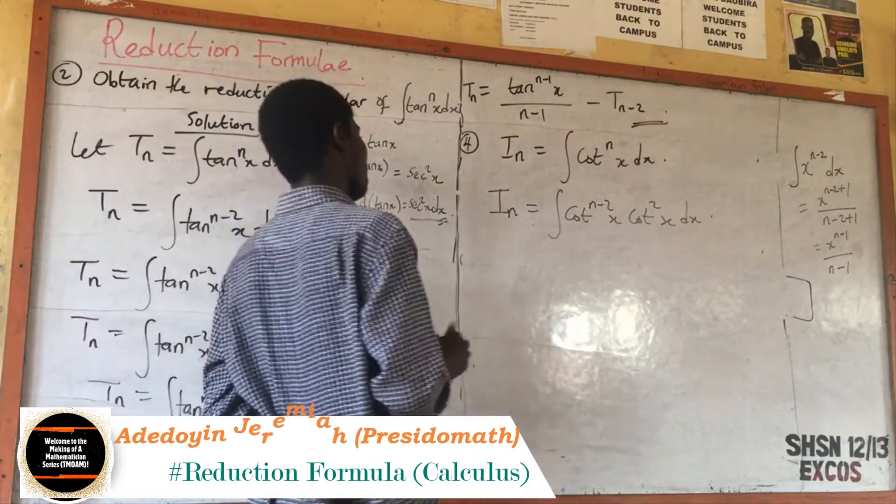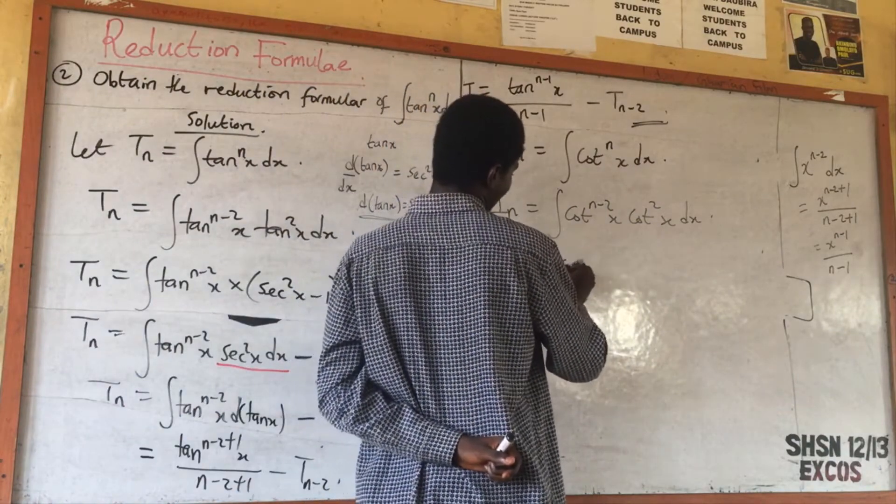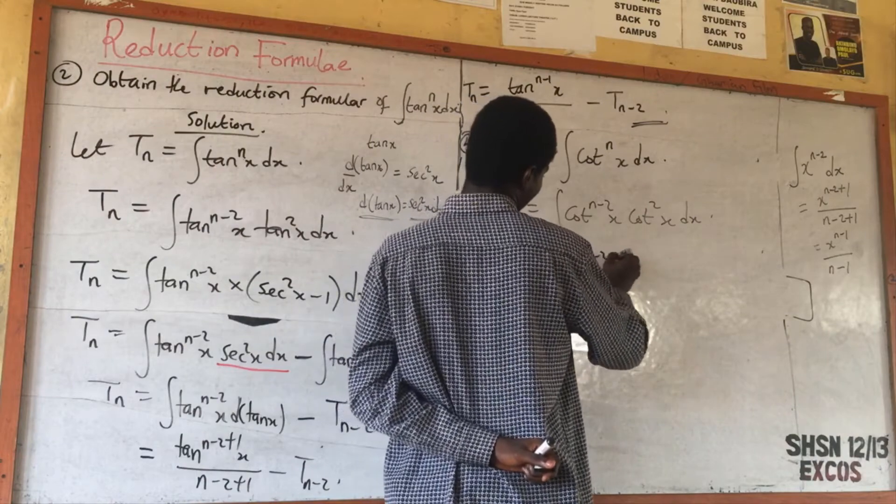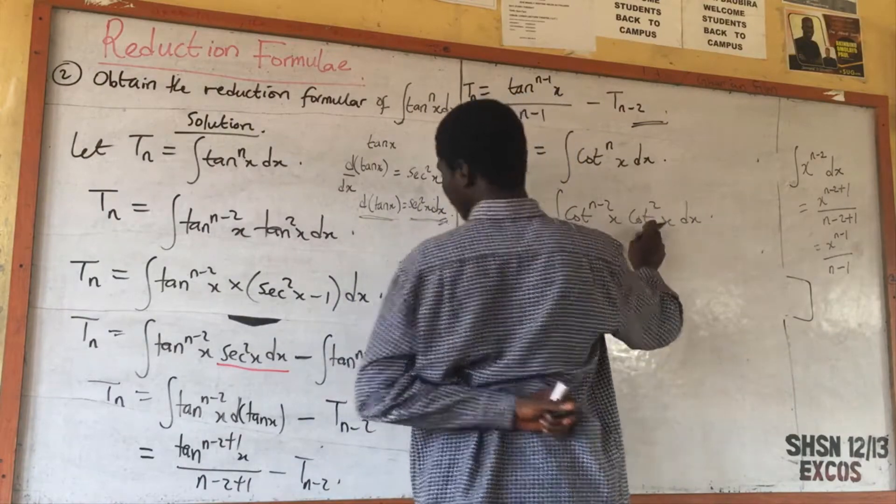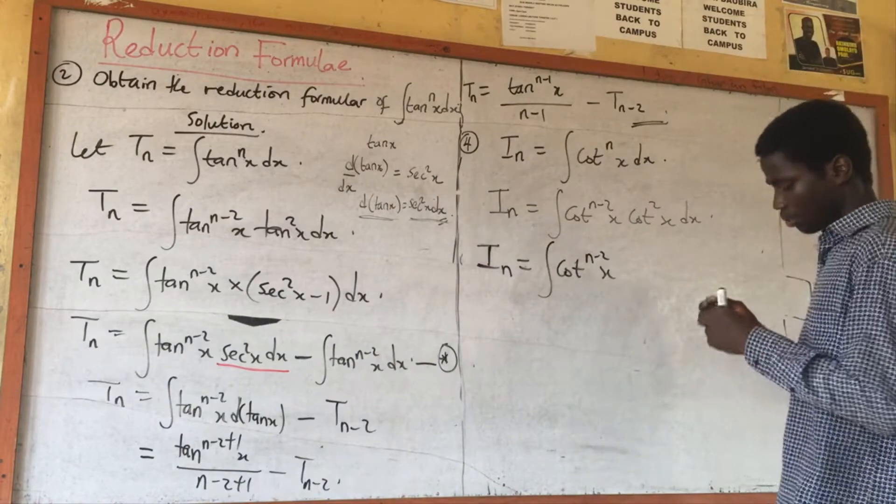From trig identity, cot^(n-2)s, from trig identity, this one will become. Don't forget,